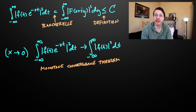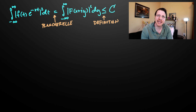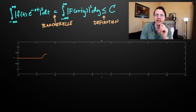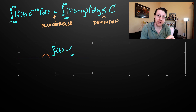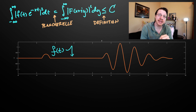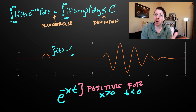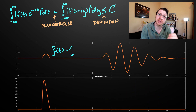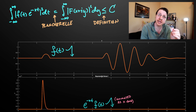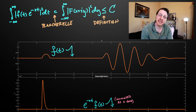Now for the last property: we want the signal to be zero for all negative t. Assume the contrary — that our signal is non-zero on a set of non-zero measure on the negative half of the real line. If this were the case, that exponential term would be positive for all those t values and all positive x. As x blows up to infinity, that chunk of the integral also blows up to infinity, which contradicts the uniform bound we established. So we have a contradiction, and f must be zero almost everywhere on the negative half of the real line — exactly what we wanted.